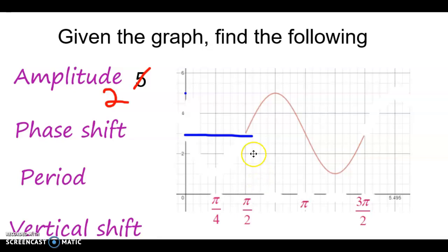The phase shift, where it starts. Well, it starts right here. That's π over 2. The period from start to finish. We have to find the difference. So the difference between π over 2 and 3π over 2 is π. You subtract 3π over 2 minus 1π over 2. You get 2π over 2. That is π.